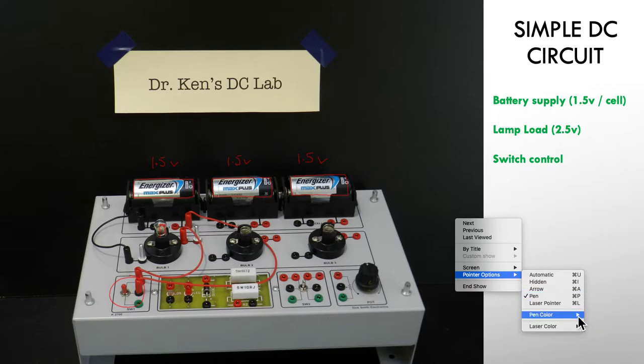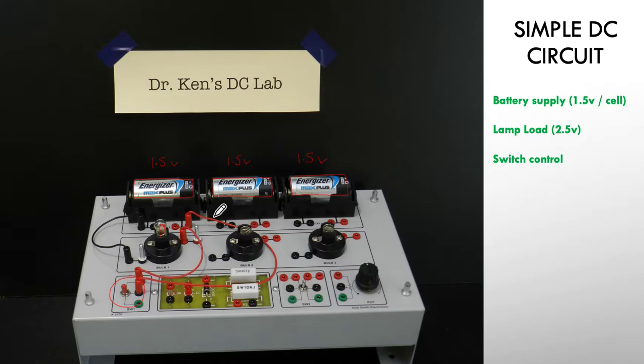I'll just change my pen color. You can see I'm coming out of the positive of my battery, using this wire and bringing it around to what we call the common of the switch. Then we're coming out of the switch with a wire and connecting to one side of our incandescent lamp, and then finally out of the lamp and round to the negative or the zero volts of the battery. So nice simple circuit. Our battery is our supply, our lamp is our load, and our switch is our control.